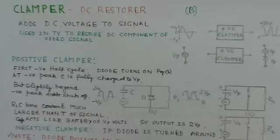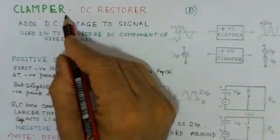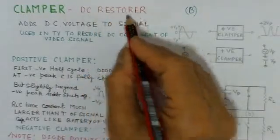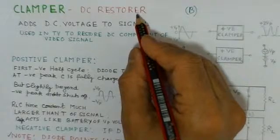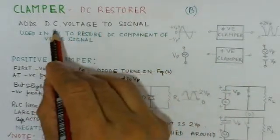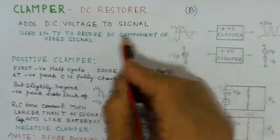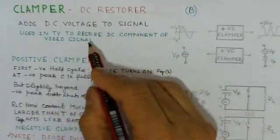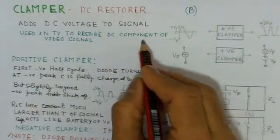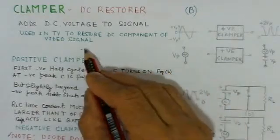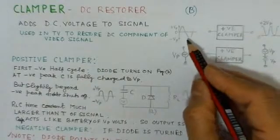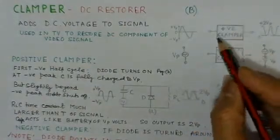Now let us start with a clamper circuit. Clamper basically is a DC restorer because it can restore the DC in the waveform. That means it can add a DC voltage to the signal and it's used in television receivers where one has to restore the DC component of the video signal which has been lost.